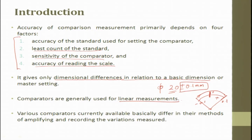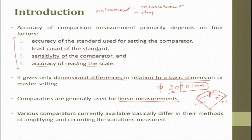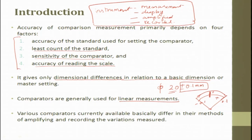For example with slip gauges, when you stack them and make an end standard, you put a dial gauge along the surface and dial it at multiple places to get the deviation — it is more of linear measurement. Various comparators currently available basically differ in their method of amplifying and recording the variation measured. Any instrument involves measurement, display of data, amplification, and recording. When we look at instruments, we always check that all four data points are capable, because we can try to measure data variation with time.